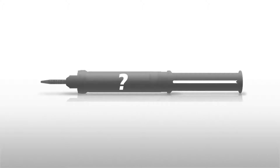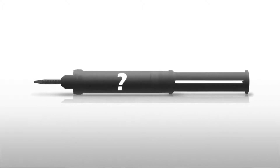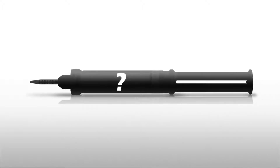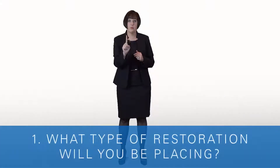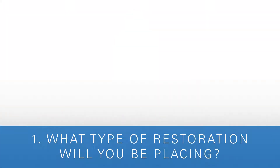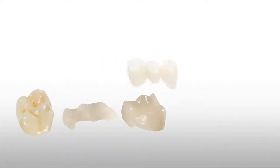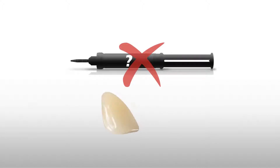How do you know when to use what if there isn't one syringe that can work in every clinical situation? You need to ask yourself these three questions. Number one: what type of restoration will you be placing? Are you placing a crown, an inlay, an onlay, a bridge, or a veneer? This is important because you wouldn't use the same cement for a veneer that you would for a crown.